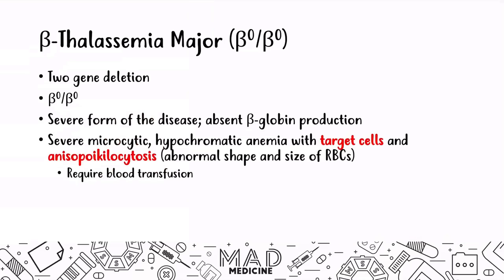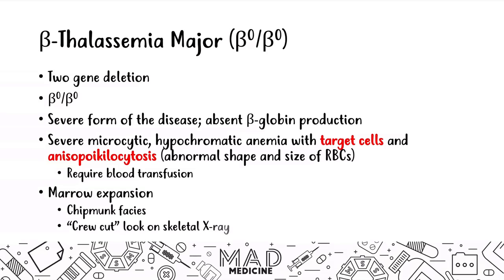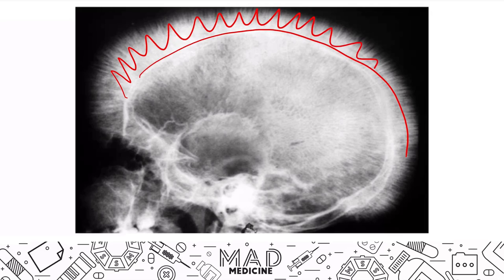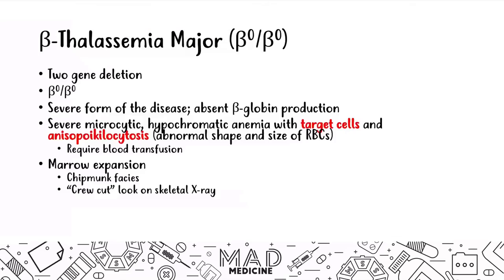As far as beta thalassemia major is concerned, because these patients are going to have abnormal functioning hemoglobin and not enough functioning red blood cells, you're going to have marrow expansion. The bone marrow is going to expand in the bigger bones — in the face and the skull is the classic presentation. These patients are going to present with chipmunk faces and a crew cut look on the skeletal x-ray, because the bone marrow is proliferating to produce more red blood cells.